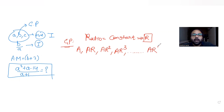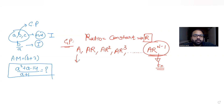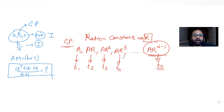To understand why the nth term is a·r^(n−1): for the first term there are zero r's, for the second term there is one r, for the third term there are two r's, for the fourth term there are three r's. So for the nth term we have n minus 1 common ratio constants, giving us the nth term as a·r^(n−1).